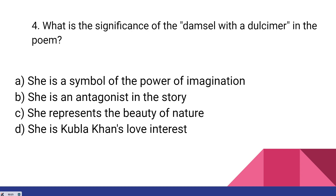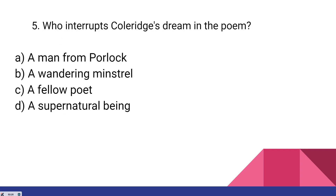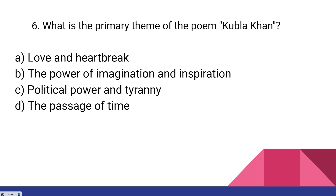The damsel with the dulcimer is a symbol of the power of imagination. Who interrupts Coleridge's dream in the poem? It's option A — a man from Porlock. What is the primary theme of the poem Kubla Khan? It's option B — the power of imagination and inspiration.